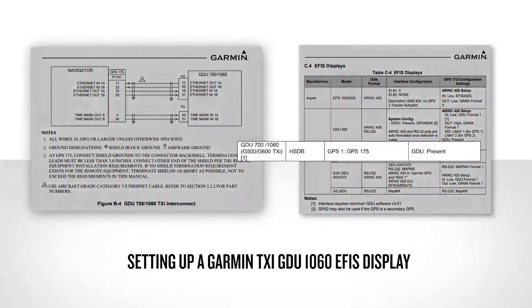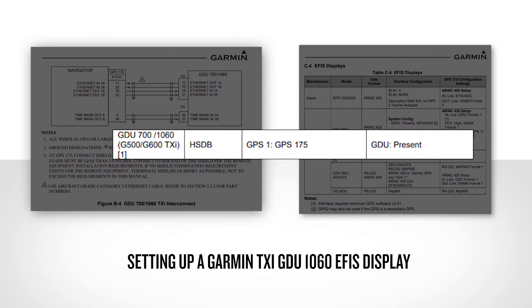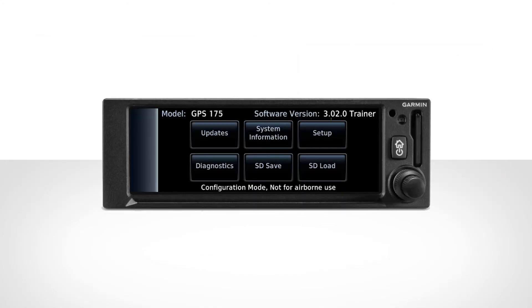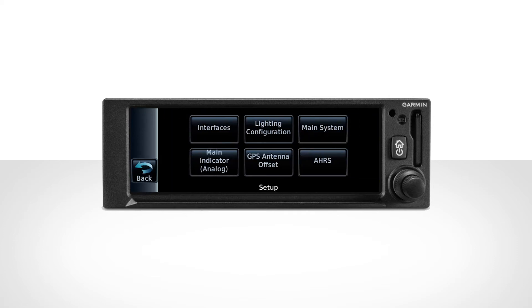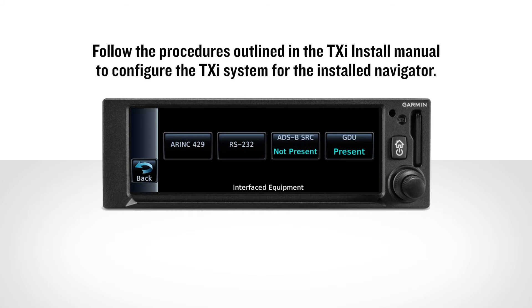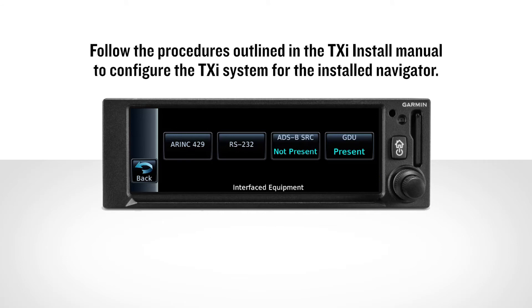The first example we'll walk through is setting up a Garmin TXI GDU 1060 EFIS display using the table provided in the installation manual. From the configuration mode home page, select the Setup button, then select Interfaces. On the Interfaced Equipment page, you'll notice the GDU button defaults to Not Present. Select the GDU button and it will now be displayed as Present. After, follow the procedures outlined in the TXI install manual to configure the TXI system for the installed navigator.